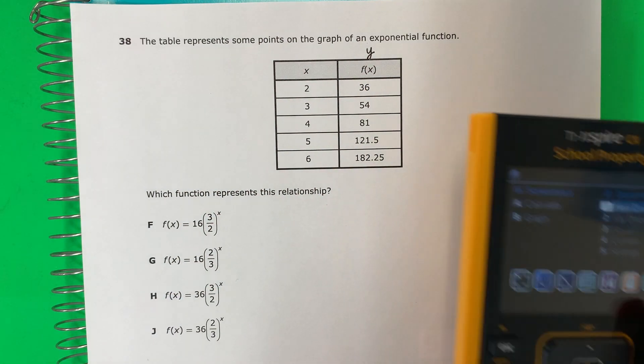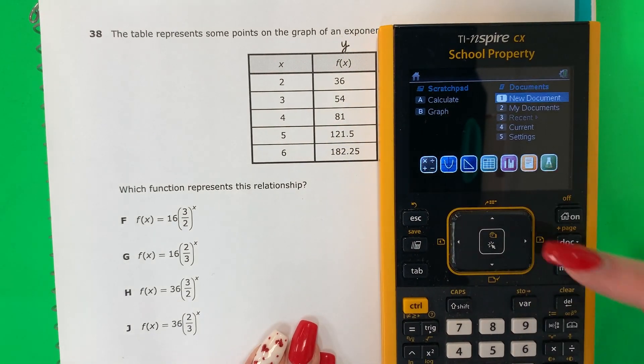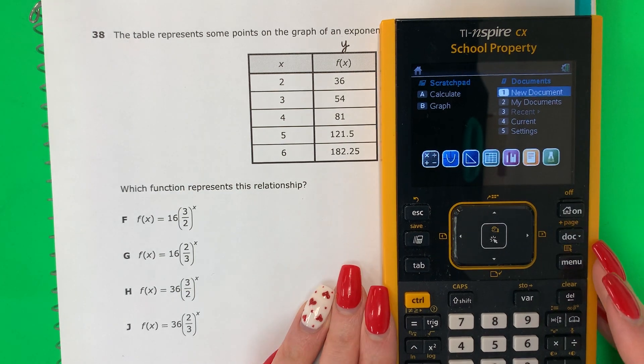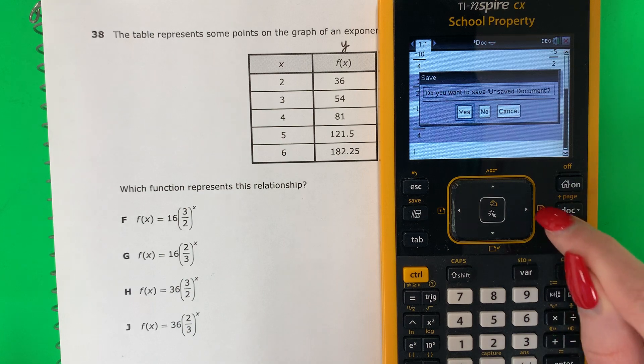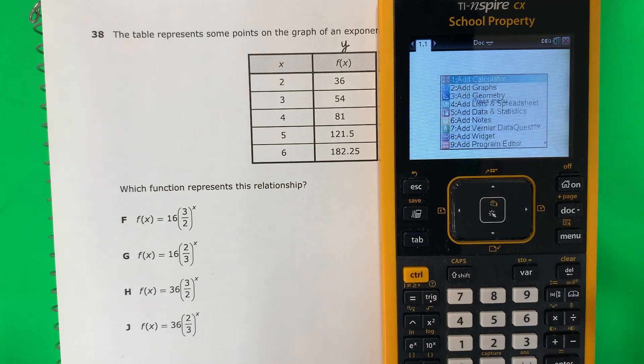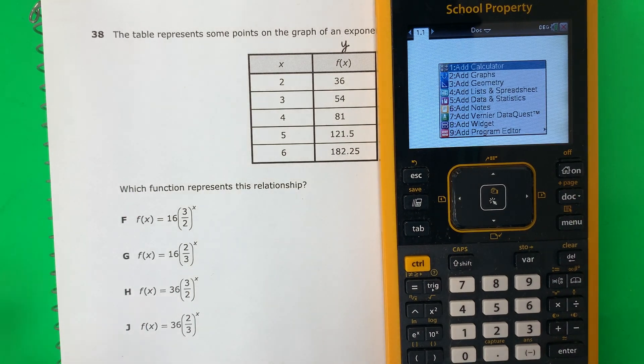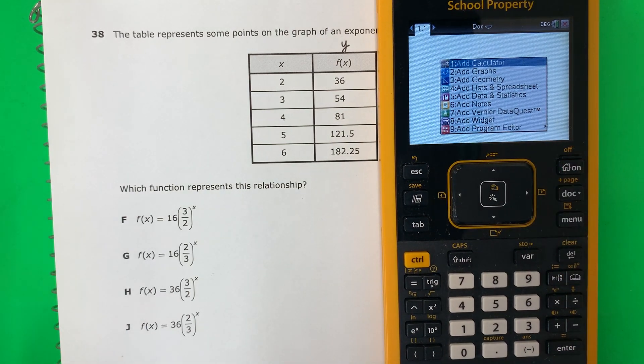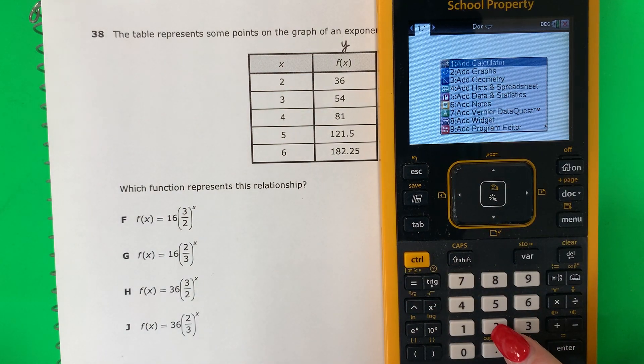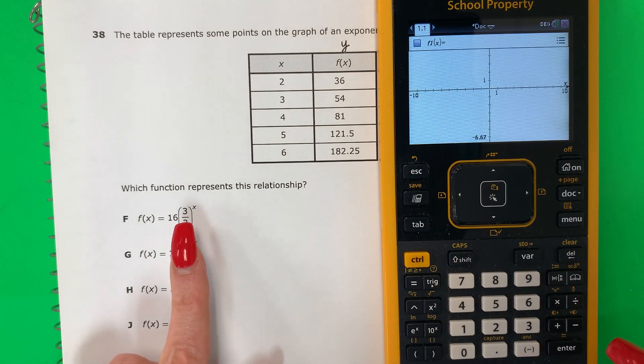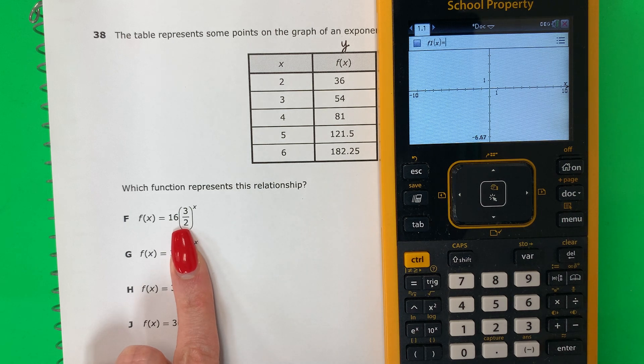So let's go ahead and use our calculator for this. Vamos a usar nuestra calculadora. Go ahead and push home, casa. You're going to push one, new document, uno. And then no, enter. We're going to go to the graph. To make a table, first we need to make a graph. Para crear una tabla, primero necesitamos crear una gráfica, which is number two, la número dos. Go ahead and push two, presiona dos. We're going to do one by one, una a la vez. Let's do the first equation, la primera ecuación.